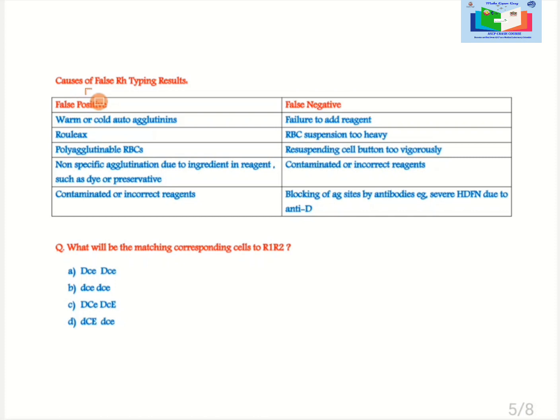Causes of false RH typing result. False positive is due to warm or cold autoagglutinins, rouleaux formation, polyagglutinable RBCs, non-specific agglutination due to the ingredient in reagents such as dye or preservative, contaminated or incorrect reagents.